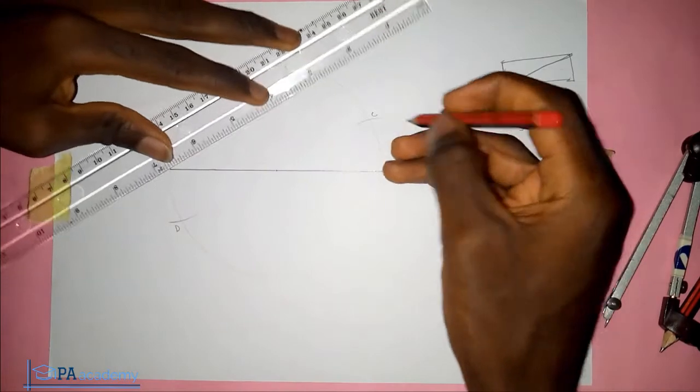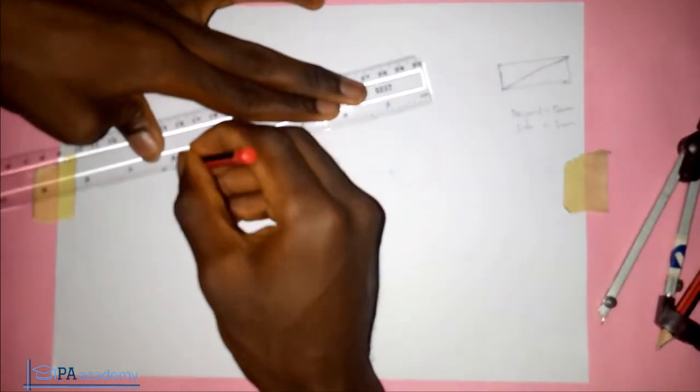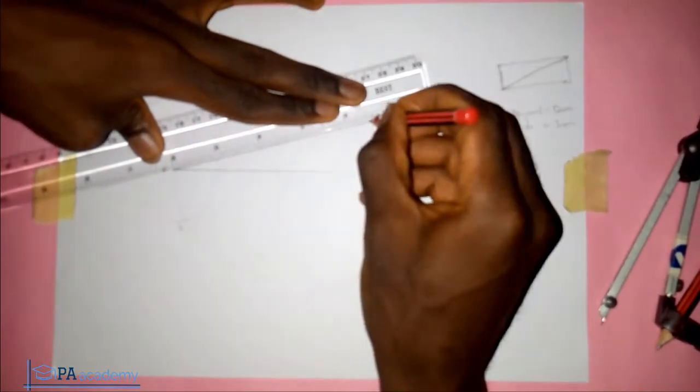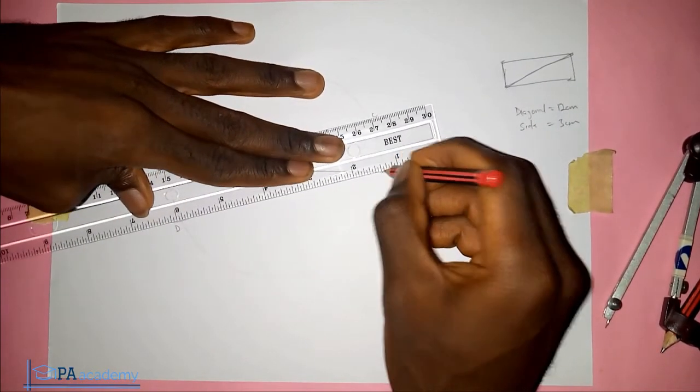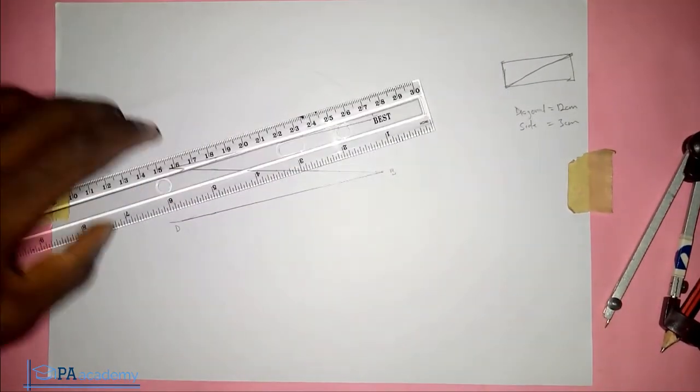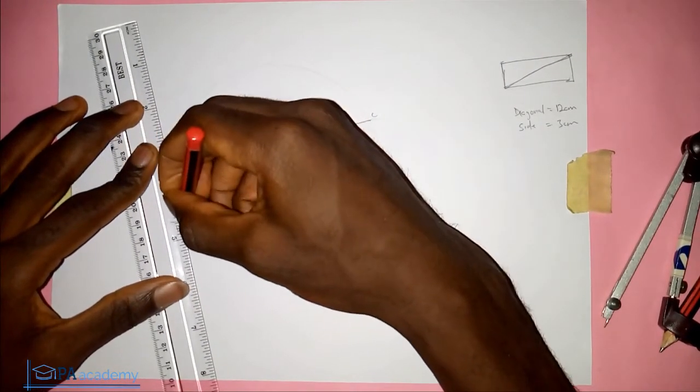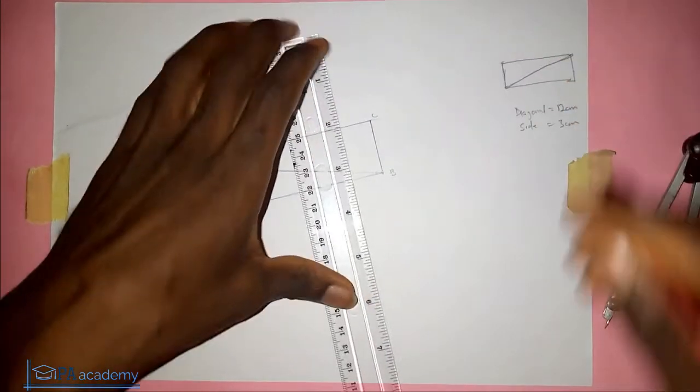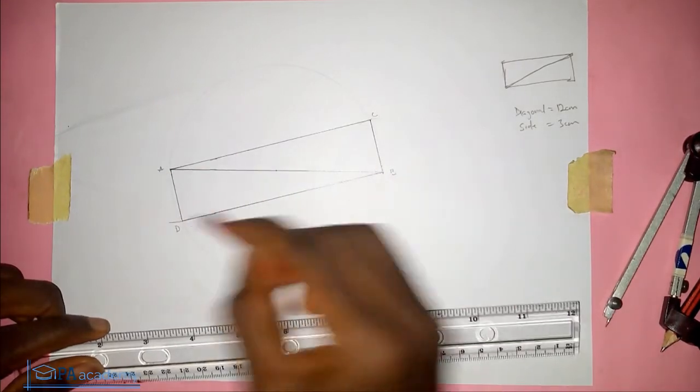So with that, we are now going to join point C and point A together, and then we are going to join point B to point D. The next thing we are going to join is point A and point D, and then point C and point B. So with that now we've been able to get the rectangle. So the rectangle is ACBD.